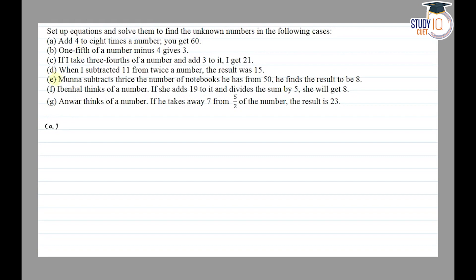So the equation is: 8 times a number, so 8x plus 4 is equal to 60. Shifting 4 to the other side, the sign changes: 8x is equal to 60 minus 4, so 8x is equal to 56.